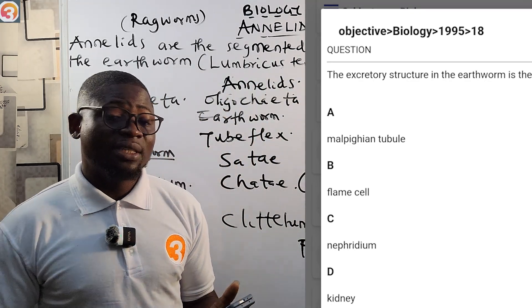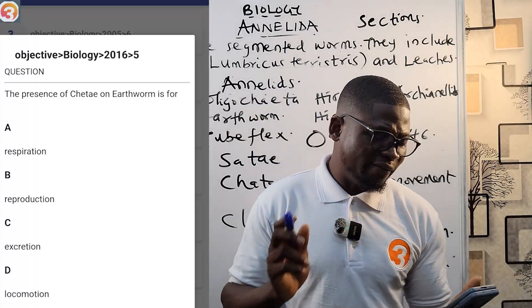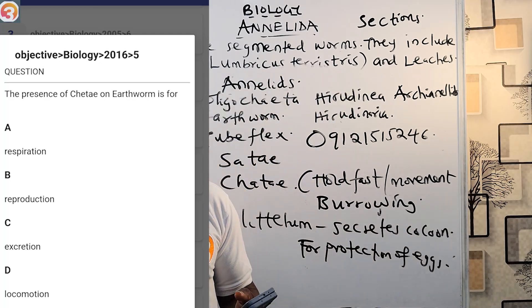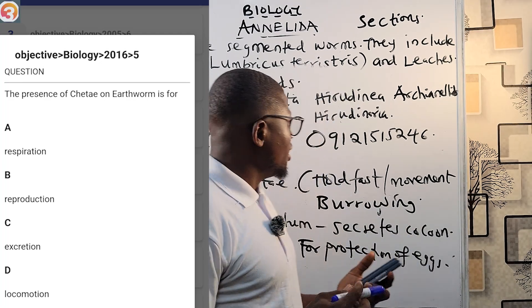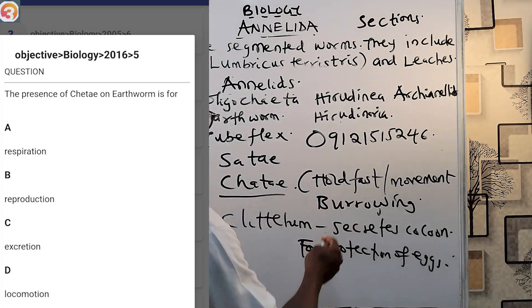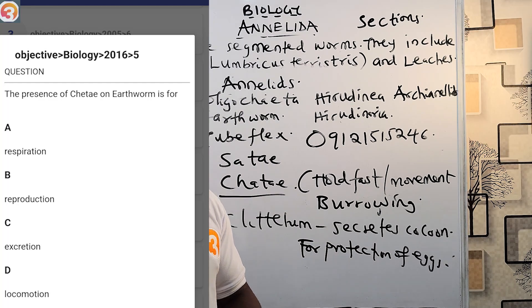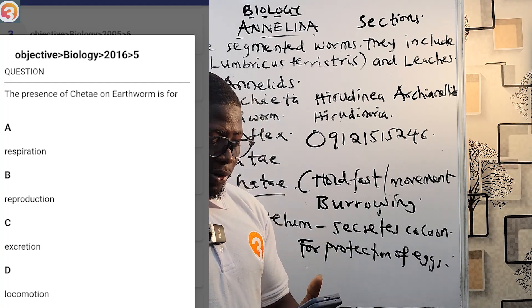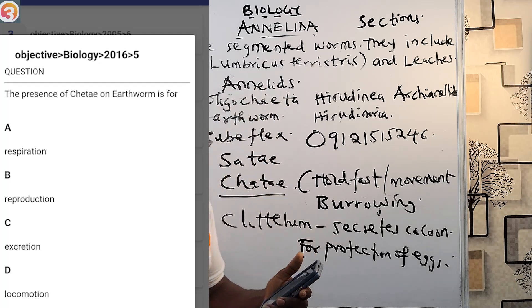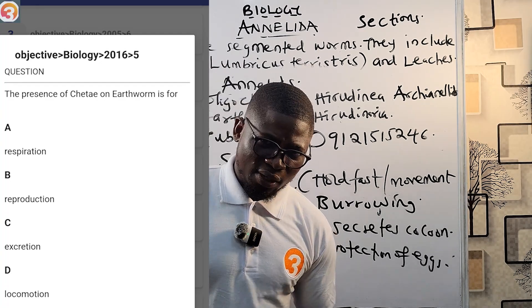Finally, 2016 question 5: 'The presence of setae on the earthworm is for...' Options: A, respiration; B, reproduction; C, excretion; D, locomotion. The correct answer is D — locomotion, for movement, anchoring, and burrowing into the ground.